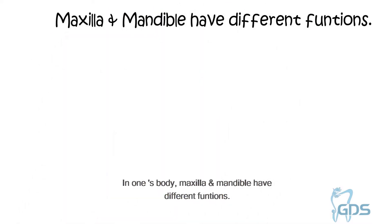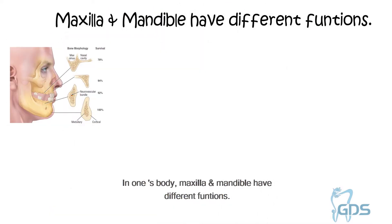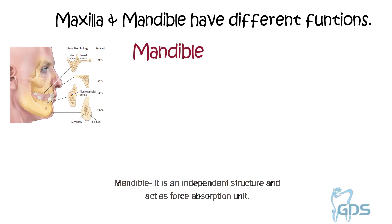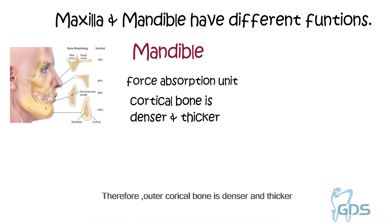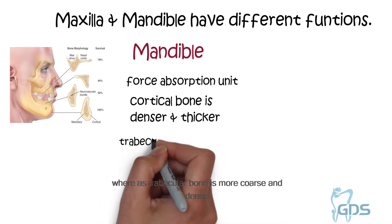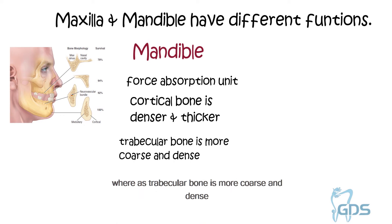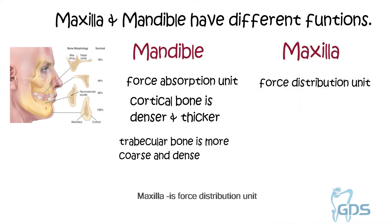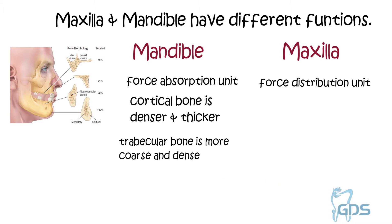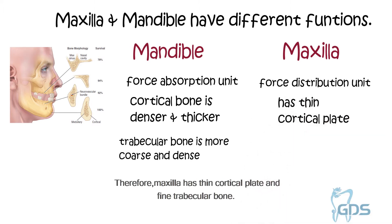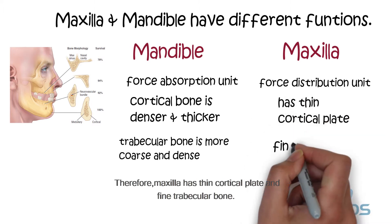In one's body, maxilla and mandible have different functions. Mandible is an independent structure and acts as a force absorption unit. Therefore, the outer cortical bone is denser and thicker, whereas trabecular bone is more coarse and dense. On the other hand, maxilla is a force distribution unit. Stresses are transferred away from the brain and orbit by the zygomatic arch and palate. Therefore, maxilla has a thin cortical plate and fine trabecular bone.